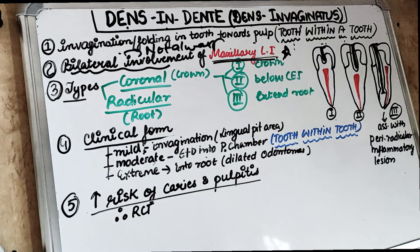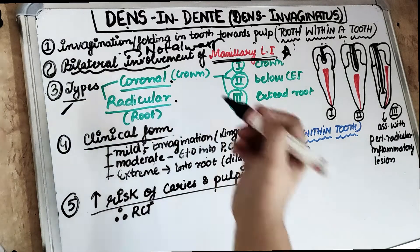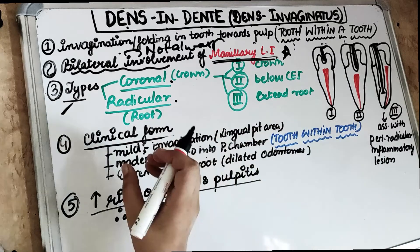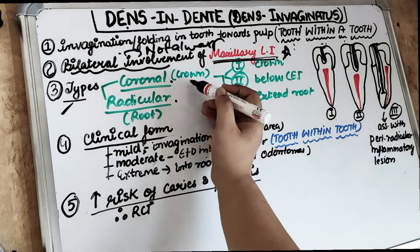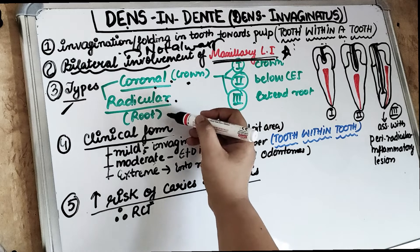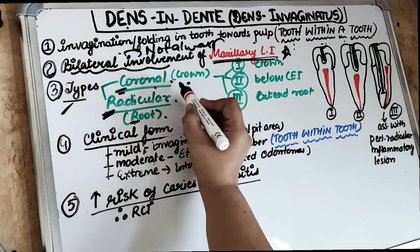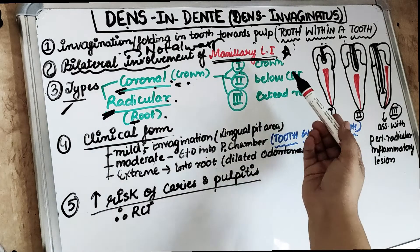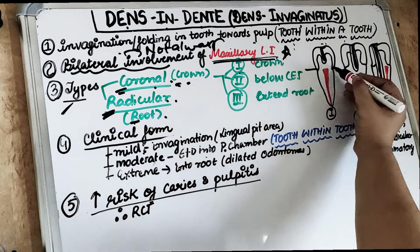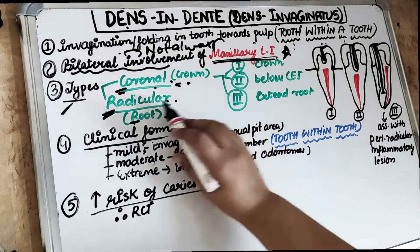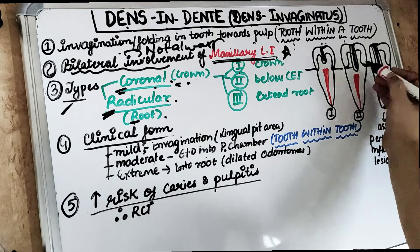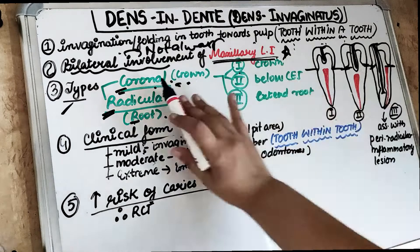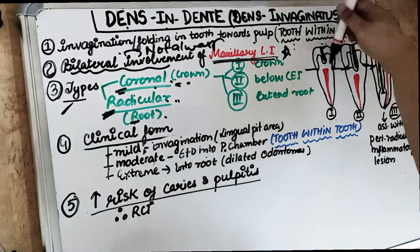The third point covers the types: one is the coronal type and another is the radicular type. Remember — coronal means crown, radicular means root. In coronal Dens in Denti there are three subtypes: the first is when invagination occurs only in the crown portion; the second is when it extends below the cementoenamel junction; the third is when it extends into the root surface. The coronal type is away from the pulp, while the radicular type involves the inside of the root, near the pulp.